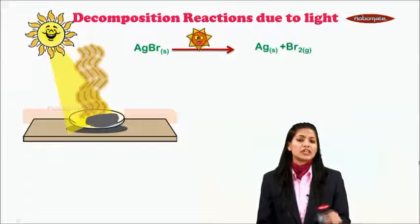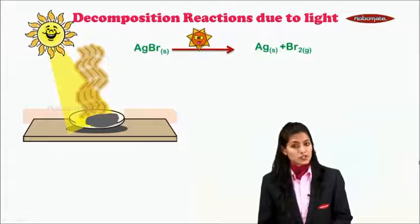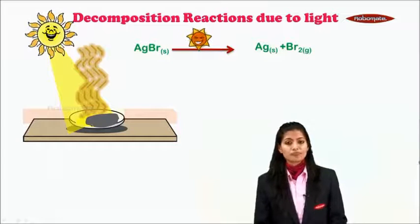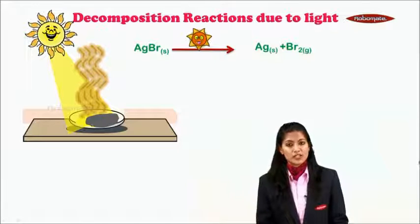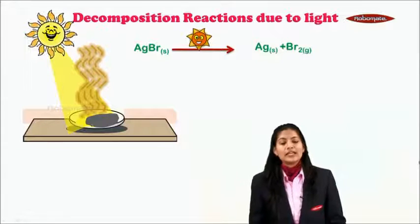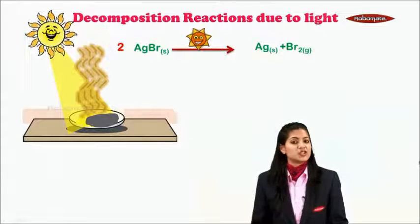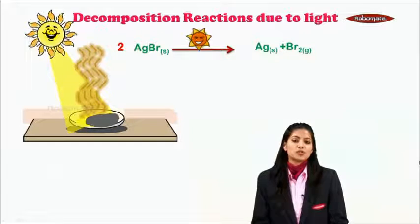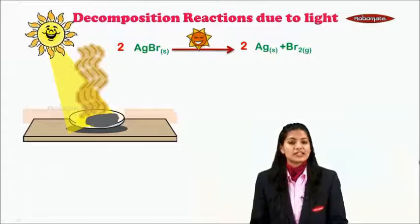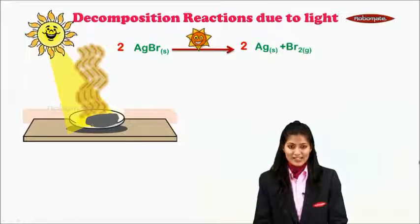Is the reaction balanced? Obviously not, because on the right side bromine is 2, while on the left side it is 1. So we need to balance the left side by making it 2AgBr. But if we make it 2AgBr, Ag becomes 2 as well, so we balance the right side making it 2Ag + Br₂. Now the reaction is balanced.